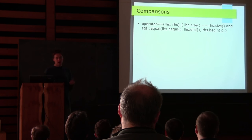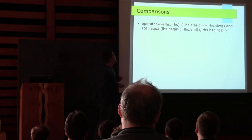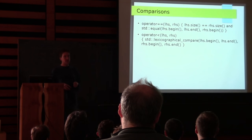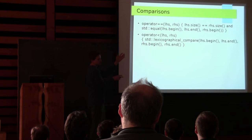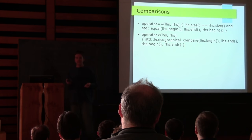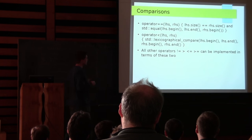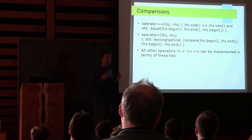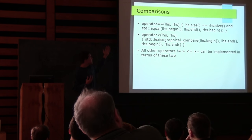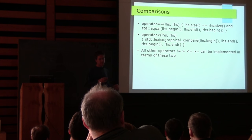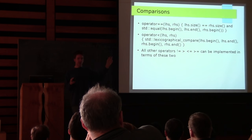For comparison operators: operator== is defined as a constant-time operation if the two sizes are the same, so we check that first. If they are the same, we compare each element using std::equal. We can do something similar with operator<, which is a lexicographical compare. All of the other comparison operators — not-equal, greater-than, greater-than-or-equal, less-than-or-equal — can be implemented in terms of these two: not-equal is 'not ==', and all the others are minor transformations of operator<.